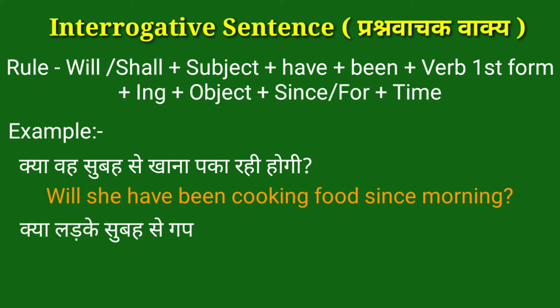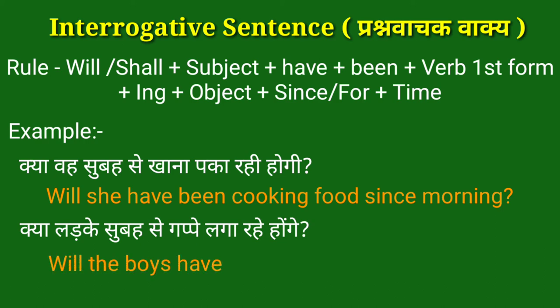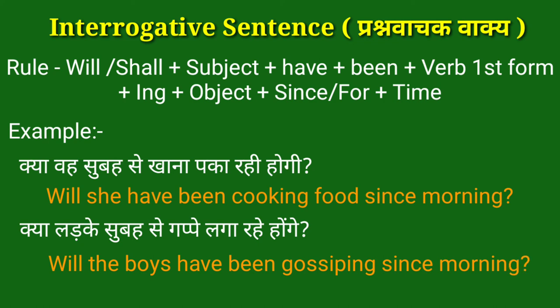Second example: क्या लड़के सुबह से गप्पें लगा रहे होंगे? — Will the boys have been gossiping since morning? इस वाक्य में 'will have been' helping verb है, 'the boys' subject है, 'gossiping' verb की first form + ing है, 'since' का प्रयोग किया गया है और 'morning' time है।